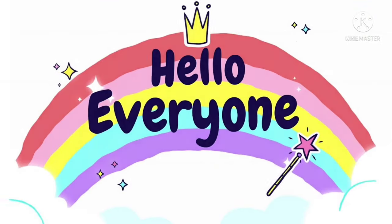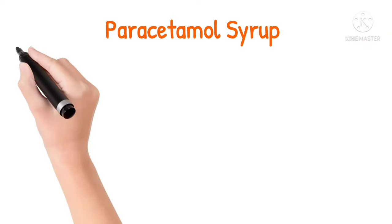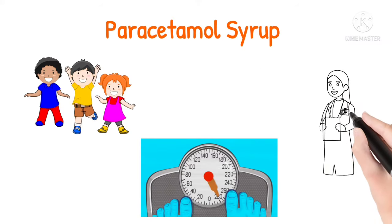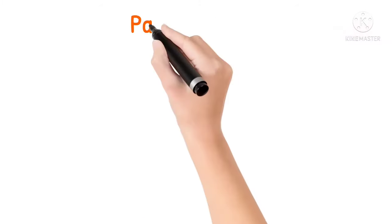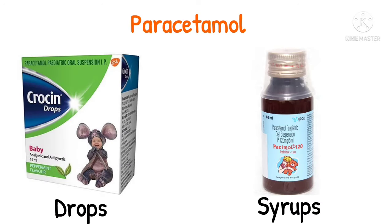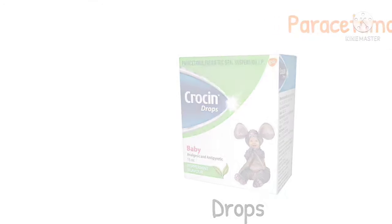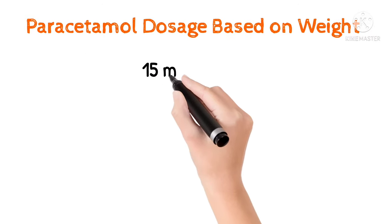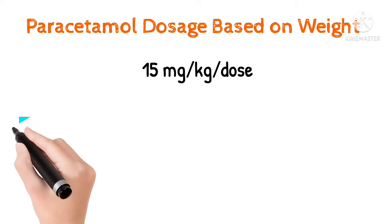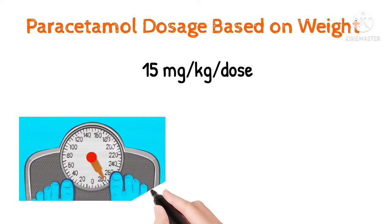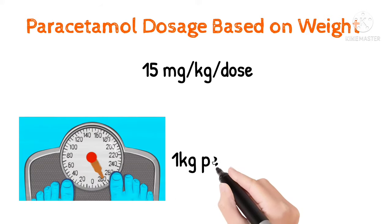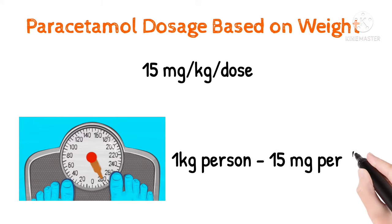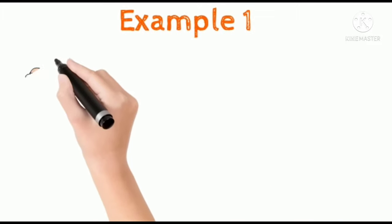Hello everyone, welcome to our channel. In this video I am going to explain about the dosage calculation of paracetamol in children. Paracetamol is available in the form of drops as well as syrups. Based upon the weight, the maximum dosage of paracetamol is 15 milligrams per kg per dose — that is, a 1 kg weight person can take approximately a maximum of 15 milligrams per dosage.